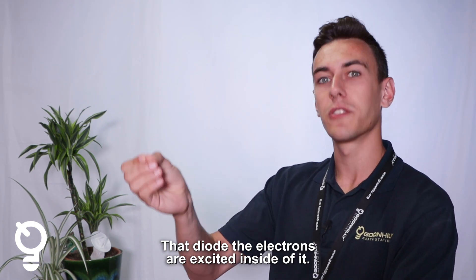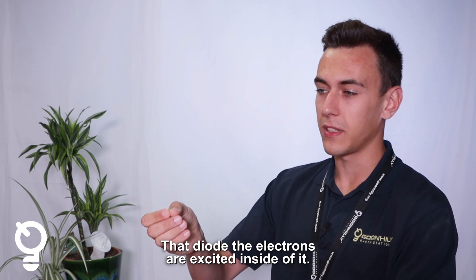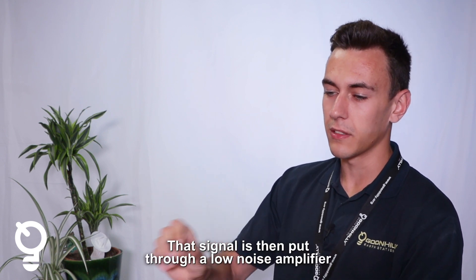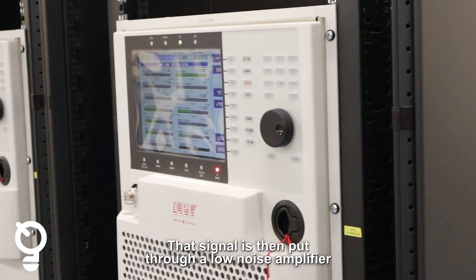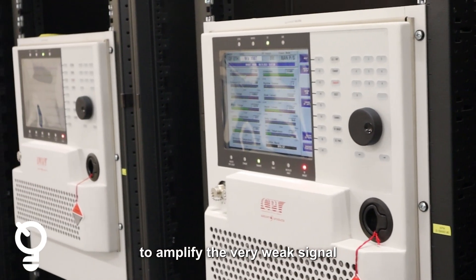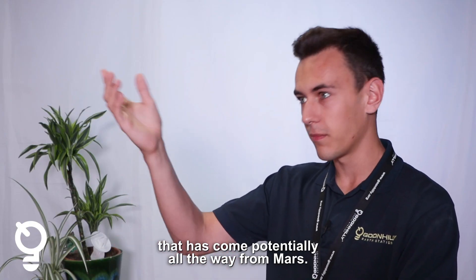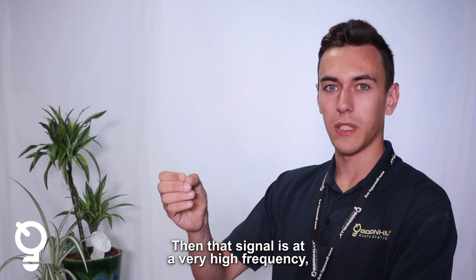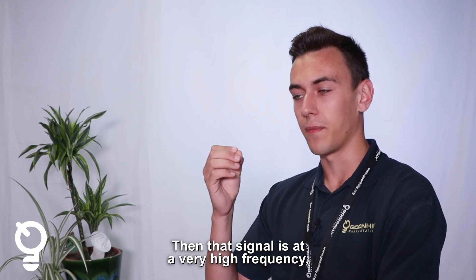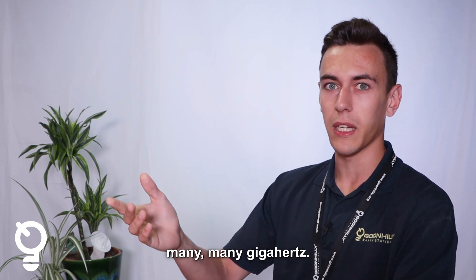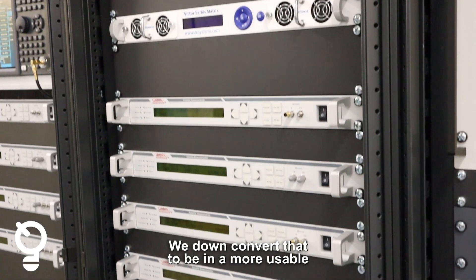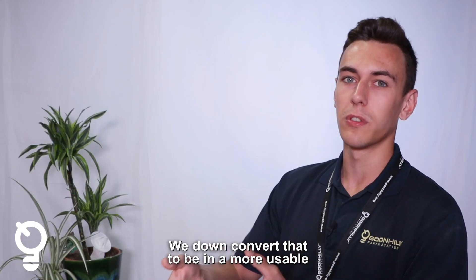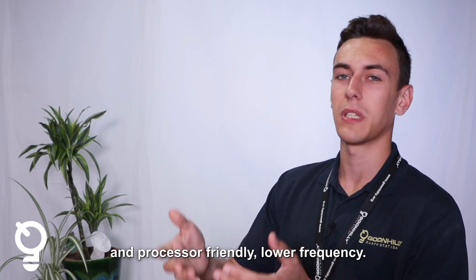In that diode, the electrons are excited inside of it. That signal then goes through a low noise amplifier to amplify the very weak signal that has come potentially all the way from Mars. Then that frequency, that signal is at a very high frequency, many gigahertz. We down-convert that to be more usable and processor-friendly, lower frequency.